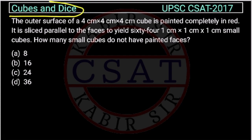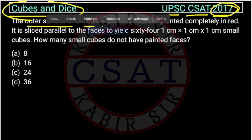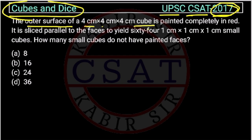Now, let us see this question from the dice and cube chapter asked by UPSC in CSET paper of 2017. The outer surface of a 4 centimeter by 4 centimeter by 4 centimeter cube is painted completely in red.